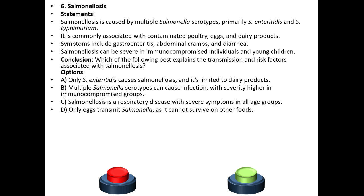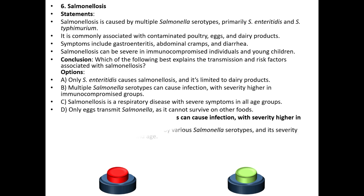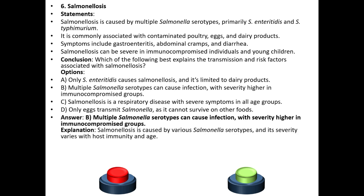Conclusion: Which of the following best explains the transmission and risk factors associated with salmonellosis? Option A: Only Salmonella enteritidis causes salmonellosis and it is limited to dairy products. Option B: Multiple Salmonella serotypes can cause infection, with severity higher in immunocompromised groups. Option C: Salmonellosis is a respiratory disease with severe symptoms in all age groups. Option D: Only eggs transmit salmonella as it cannot survive on other foods. The answer is B. Explanation: Salmonellosis is caused by various Salmonella serotypes and its severity varies with host immunity and age.